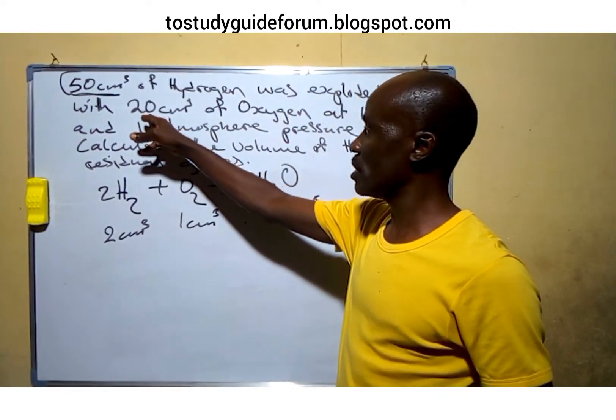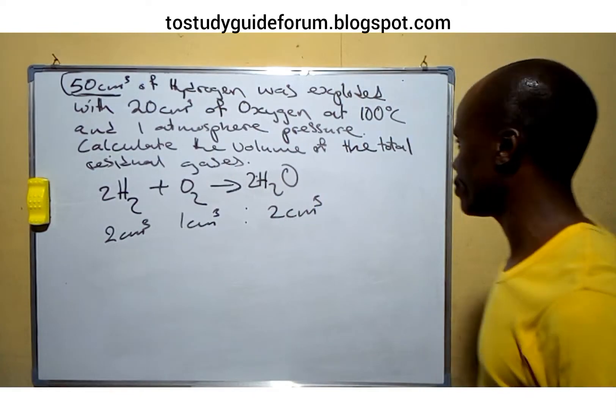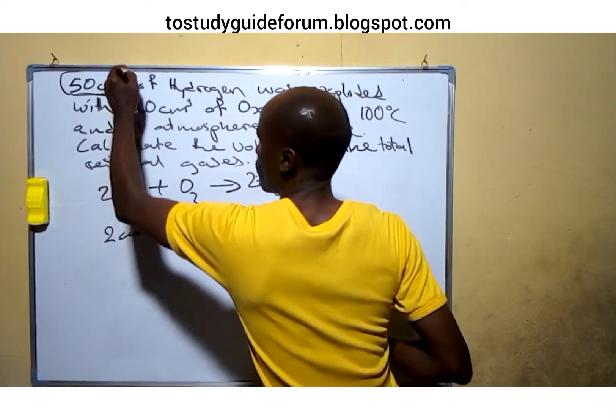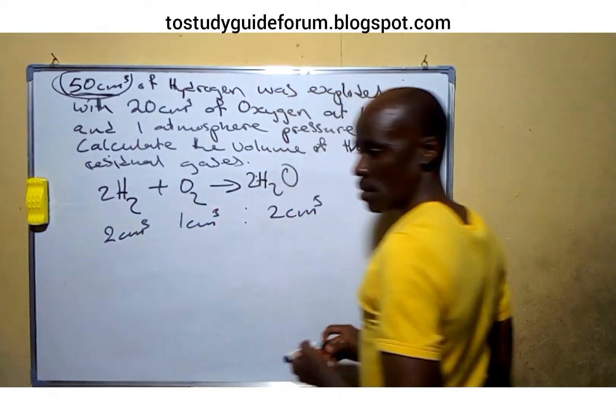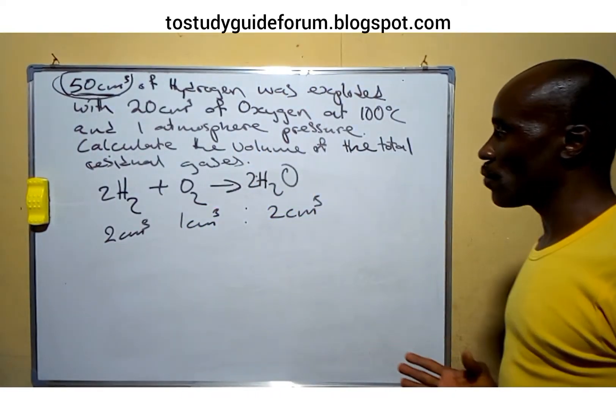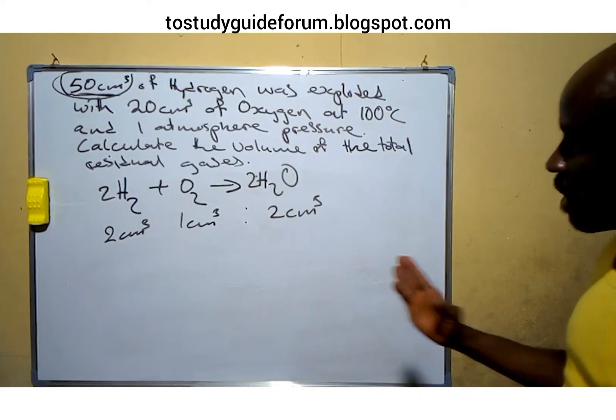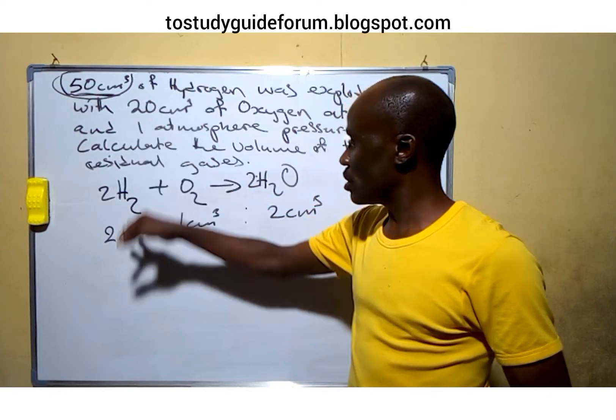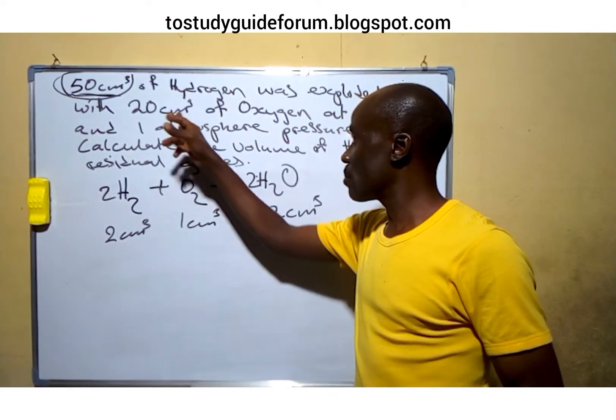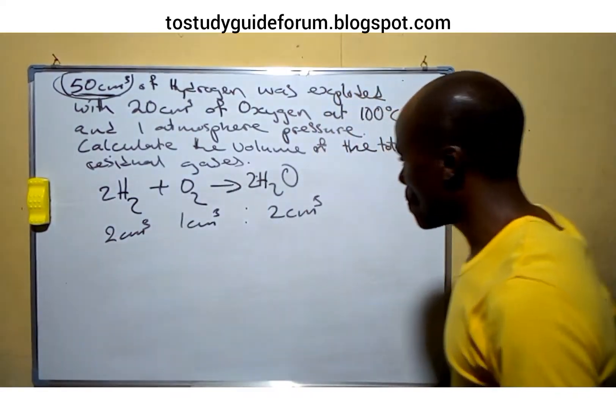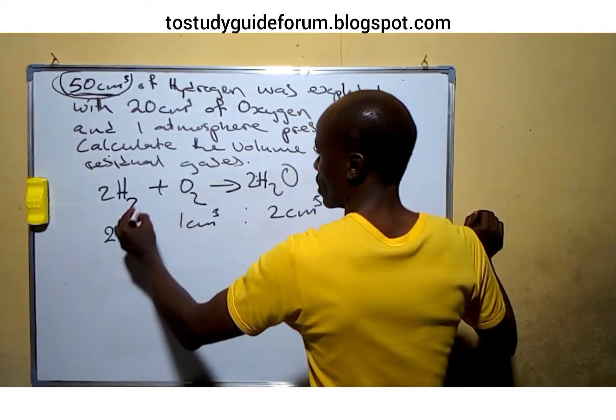So from this chemical equation, we have 20 cm³ of oxygen and we have 50 cm³ of hydrogen. From here we need to find out the volume of hydrogen that combined with 20 cm³ of oxygen.